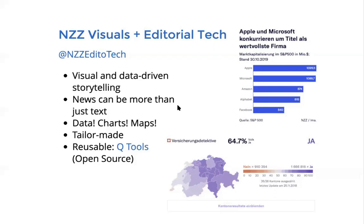So we also try to provide reusable tools where we use the same design language our visuals colleagues use in their custom-made charts. We try to make it automated so you just enter the data and get your chart. We have a platform called Qtools which does this and is also open source. I've provided two examples: a bar chart of market capitalization of big American tech companies, and voting results in Switzerland, which is a recurring topic.